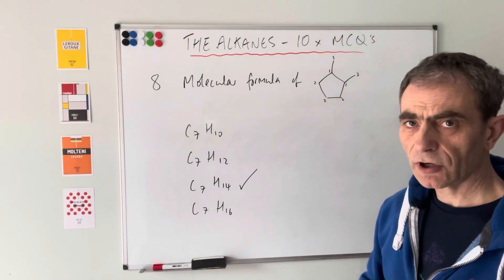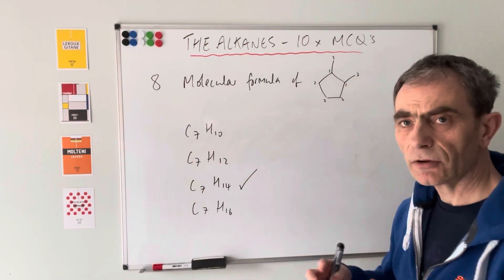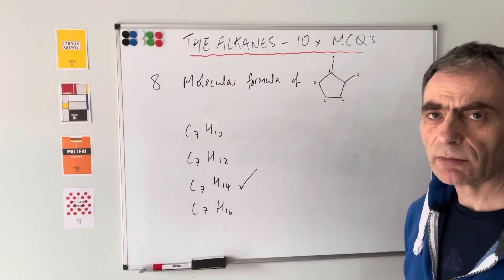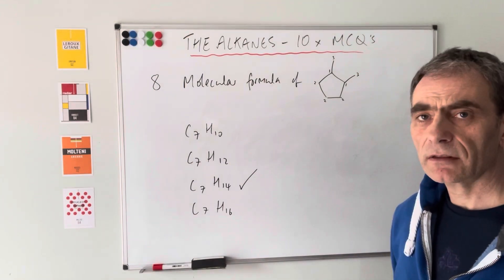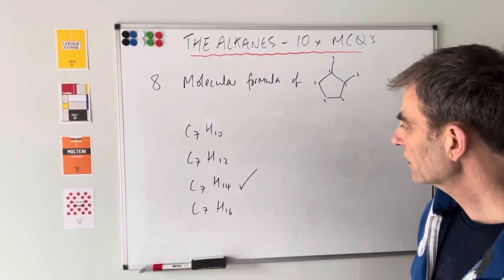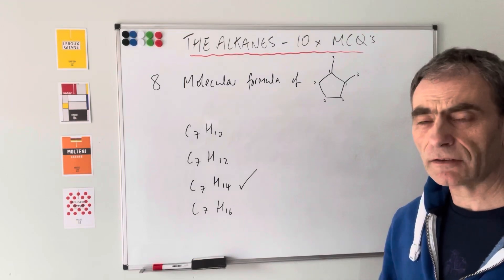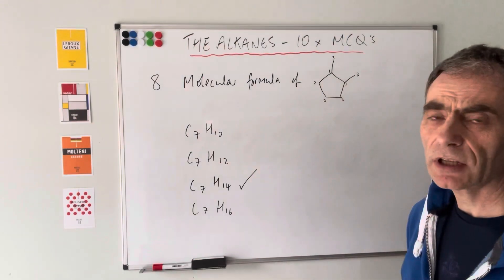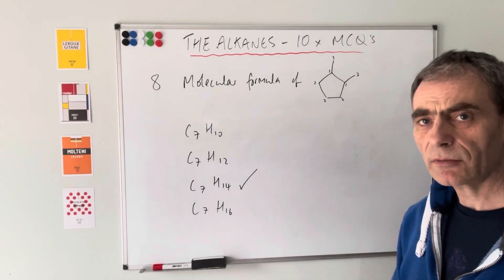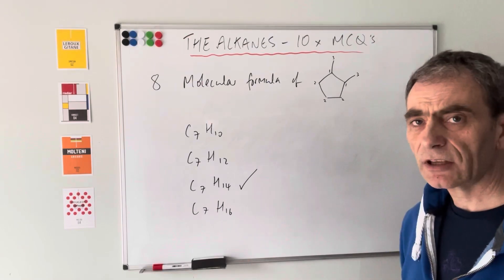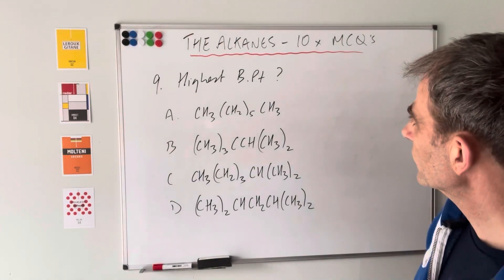A quicker way for more complicated molecules: the general formula for alkanes is CₙH₂ₙ₊₂. Every time you put a ring into a structure, you drop the number of hydrogens by two. So with seven carbons you'd normally have 16 hydrogens, but subtract two for the ring, giving 14 hydrogens - C₇H₁₄. Similarly, every double bond also reduces the hydrogen count by two. That's useful for more complicated molecules.